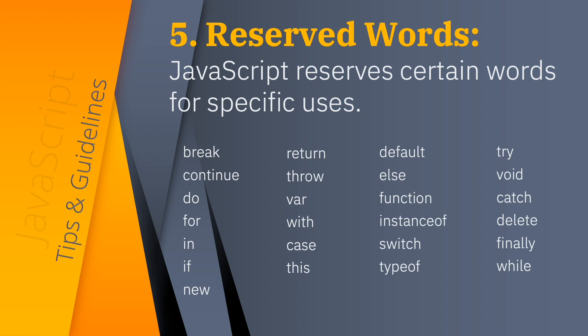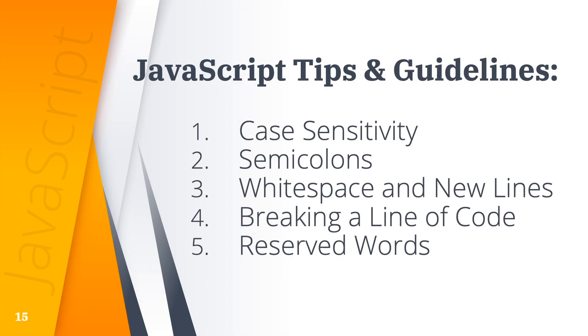We will review them very quickly. First is case sensitivity. Second is semicolons. Third is whitespace and new lines. Fourth is breaking a line, and fifth is reserved words. These are important things to know when coding with JavaScript. In the next slide are the JavaScript statistics.